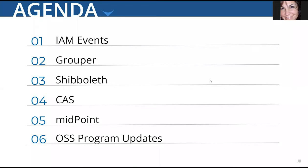First we're going to start off and talk about IAM events. We're then going to move into more application-related topics: Grouper, Shibboleth, CAS, and Midpoint, which will give you an update on some community highlights as well as some sustaining engineering activities. Then we're going to end with some open source support program updates.